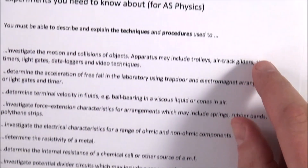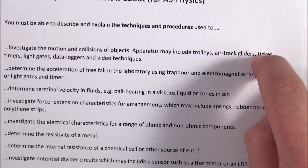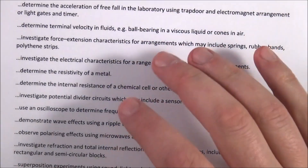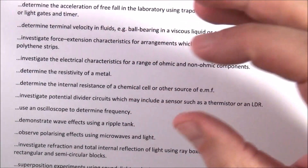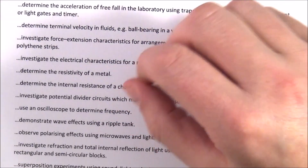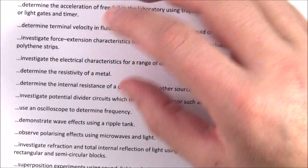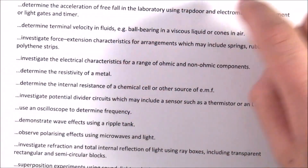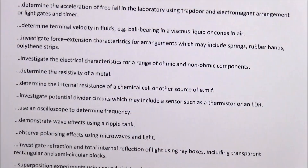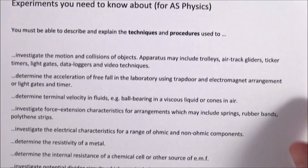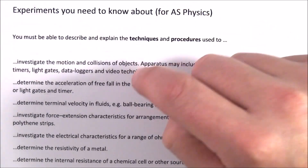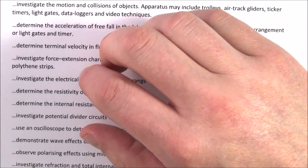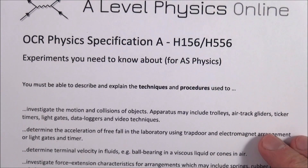If you haven't seen a ticker timer in the course, go and see your teacher and actually have a look at one to see how it works, because there are a lot of marks available. You need to know about all of these experiments — how you set up the equipment, the measurements you take, what you do with that data, and what kind of graph you might plot. You also need to know basic skills like percentage uncertainty and minimizing errors. I've linked to more videos from this one, and the link to the document is just beneath the video. Use this to structure your revision — good luck!